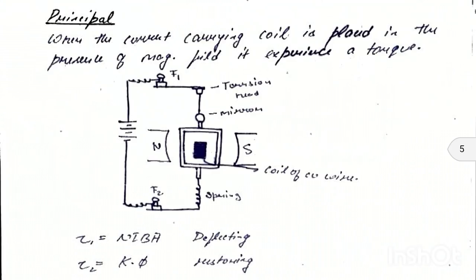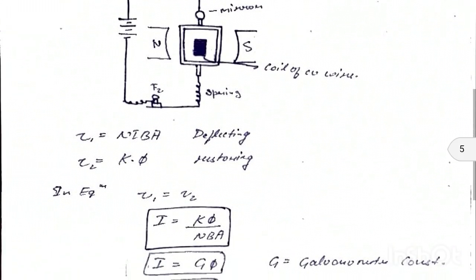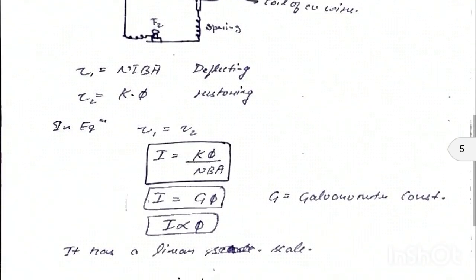The second wire is connected to terminal T2 through a spring. A mirror is attached to the upper wire. Working: when a current-carrying coil is in a magnetic field, a torque is produced with value NIBA. The restoring torque has value Kφ. Equating these: I = Kφ / NBA, where K is a constant, φ is angle of twist, N is number of turns, B is magnetic field, and A is area.